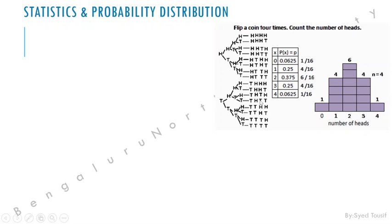If we check for two heads, we count the occurrences where exactly two heads appear — and we get six such outcomes. So out of sixteen total patterns, there are six scenarios where two heads may occur. That gives us six by sixteen, which is approximately 0.375 — meaning around 37 percent probability that two heads occur in four tosses.